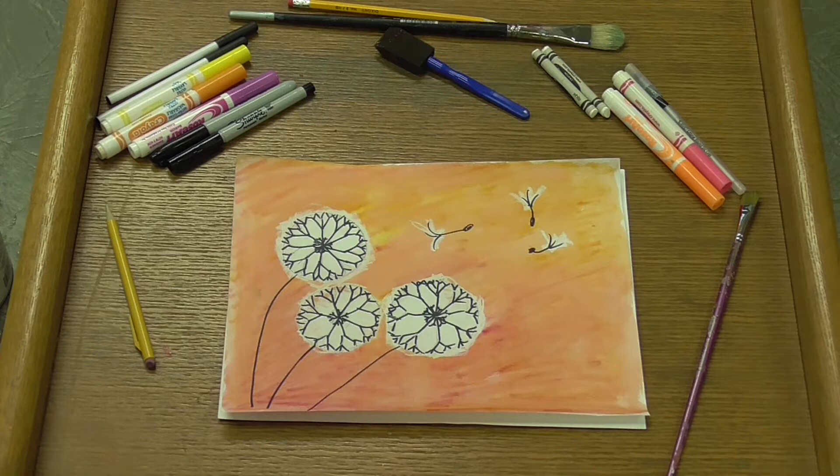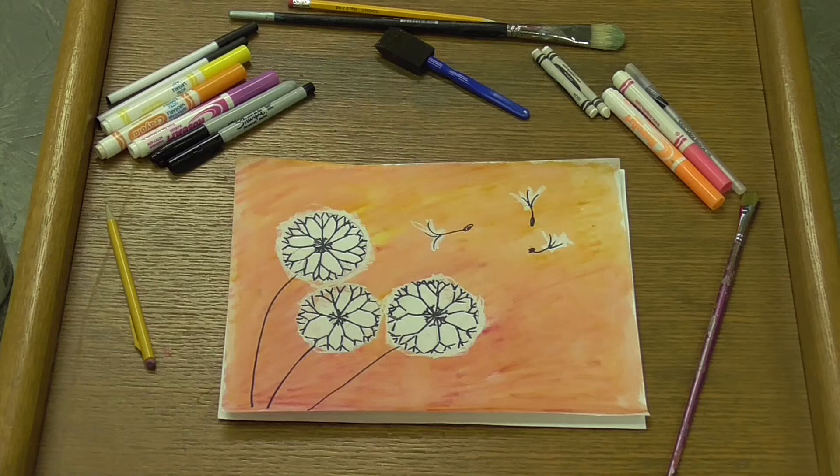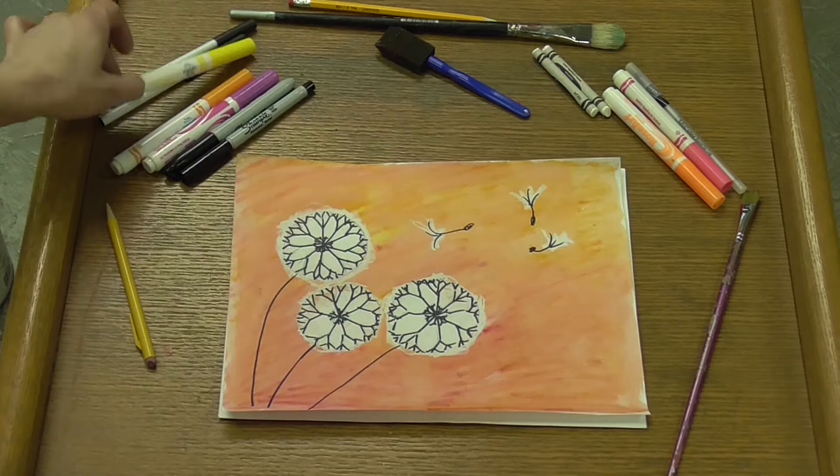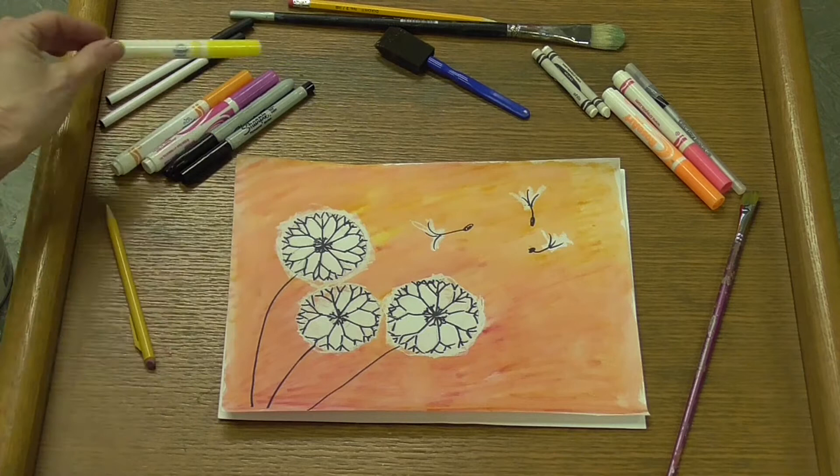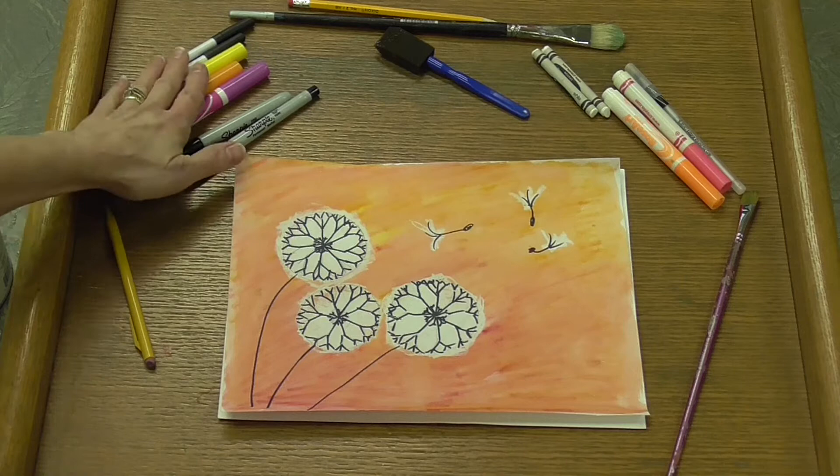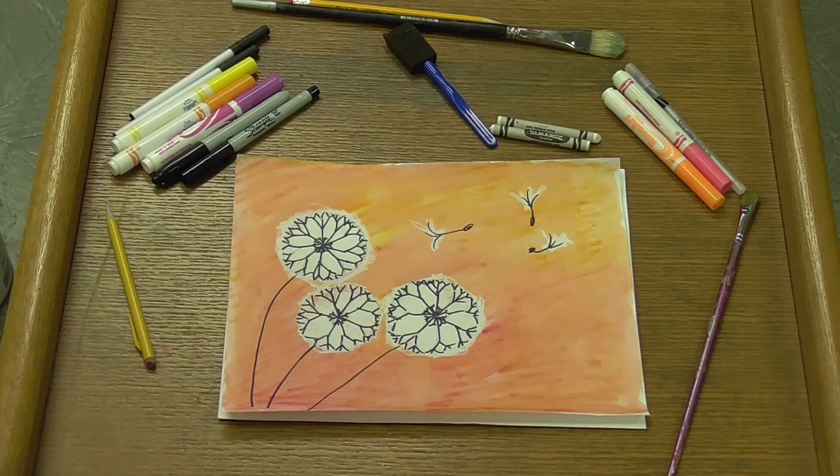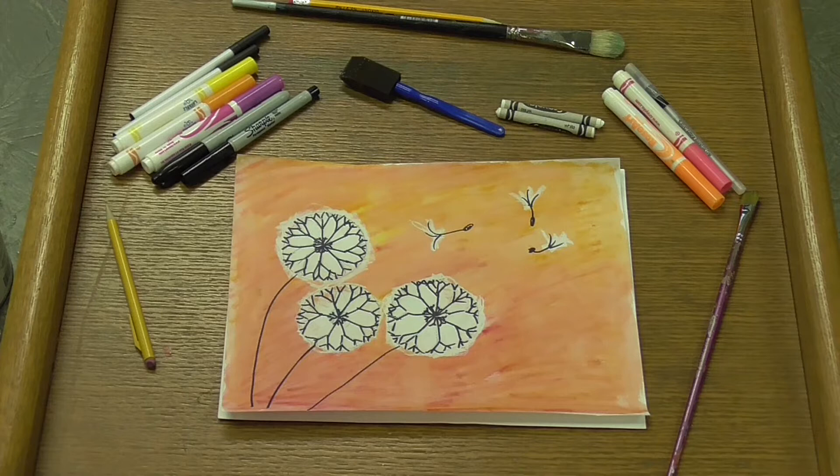You'll need to gather a few items: regular magic markers—any brand, but washable or non-permanent. You'll see why later. You'll also need at least one black Sharpie marker, a pencil, and a white crayon. At the end, we're going to do a little painting and I'll show you how to mix those markers and make better colors.